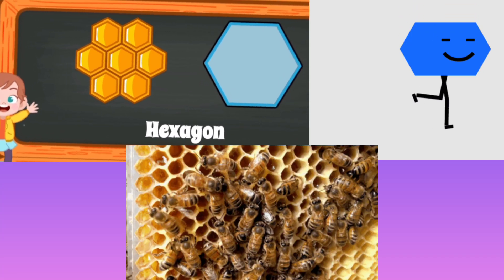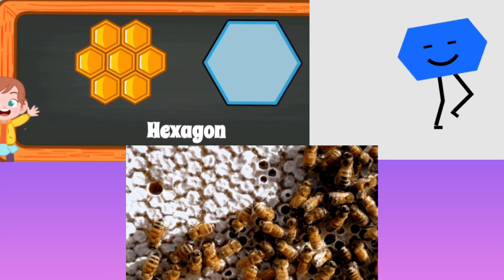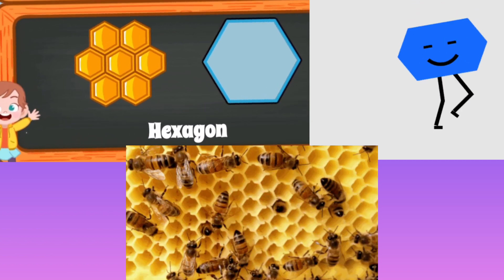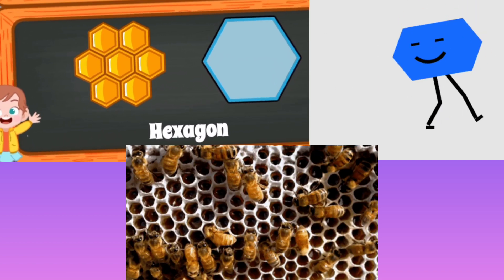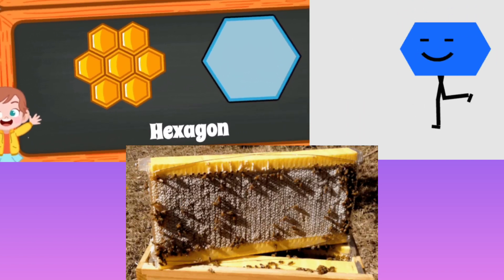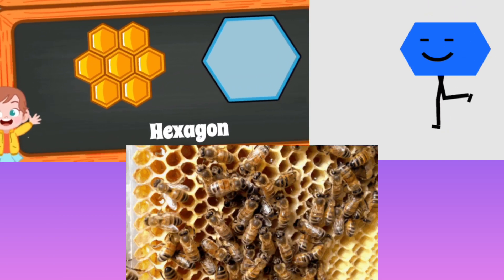This is a hexagon. A hexagon has six sides. The honeycomb is in hexagon shape.